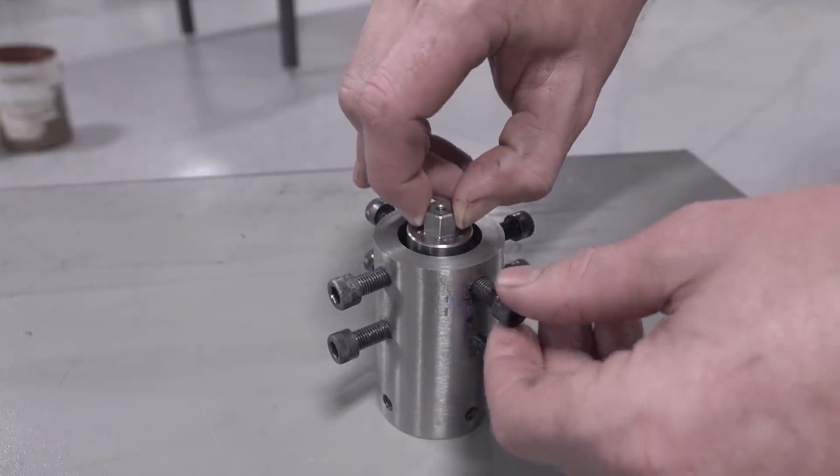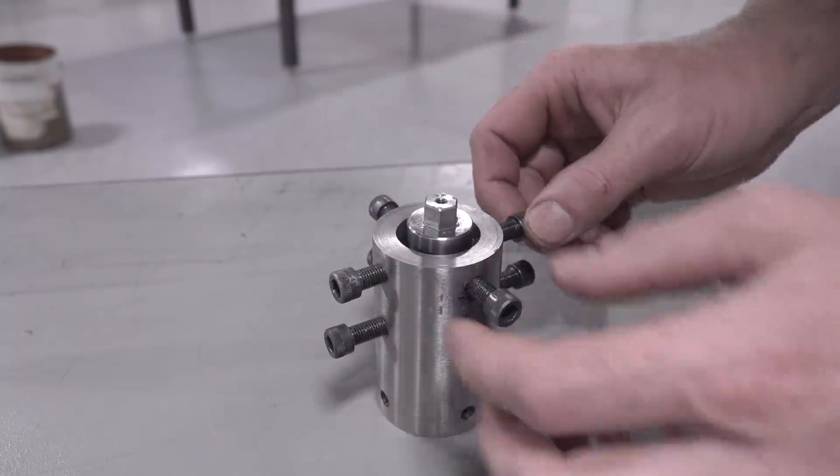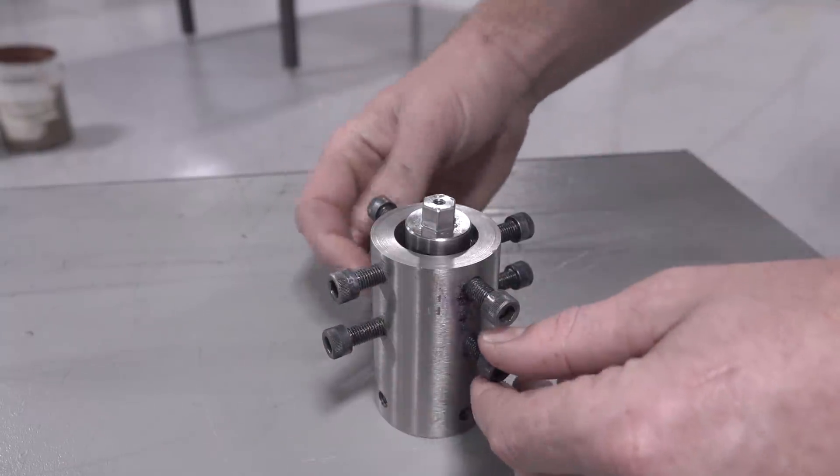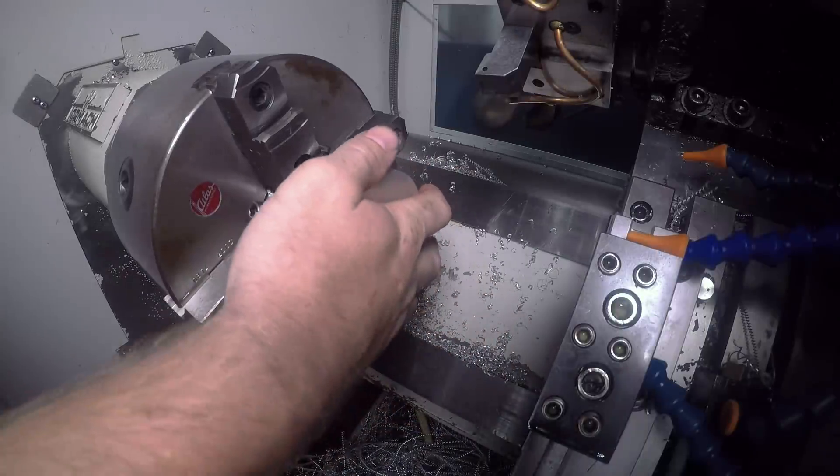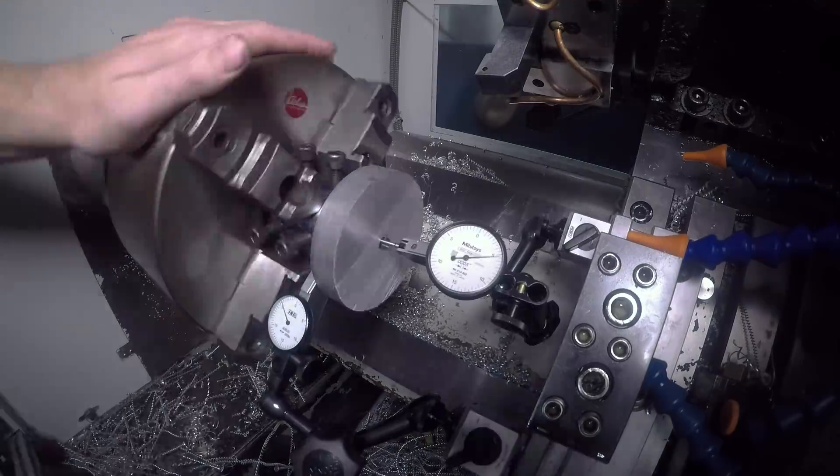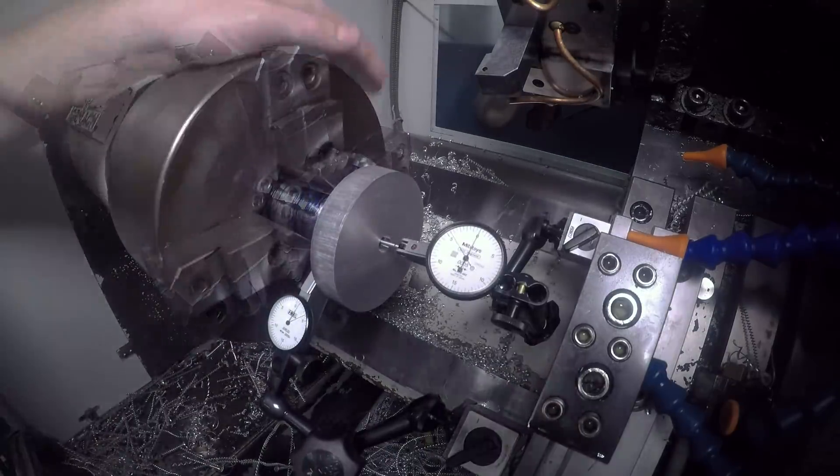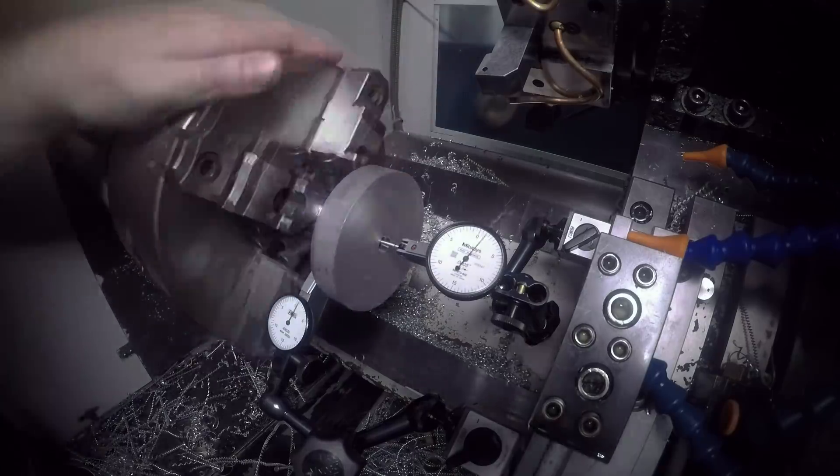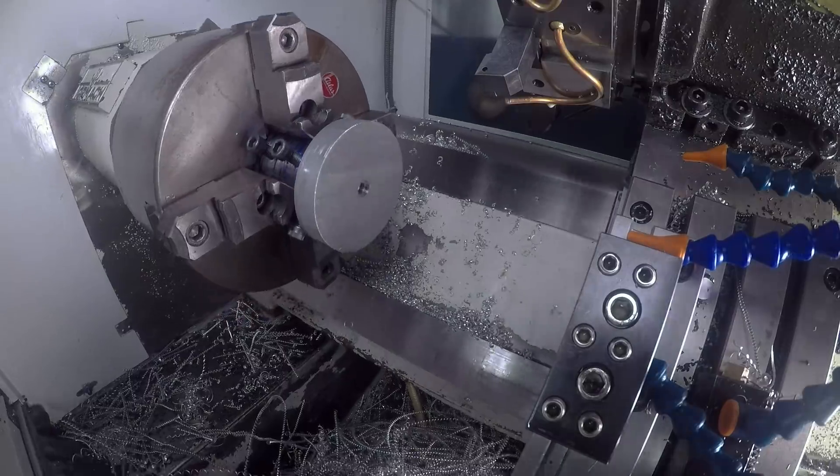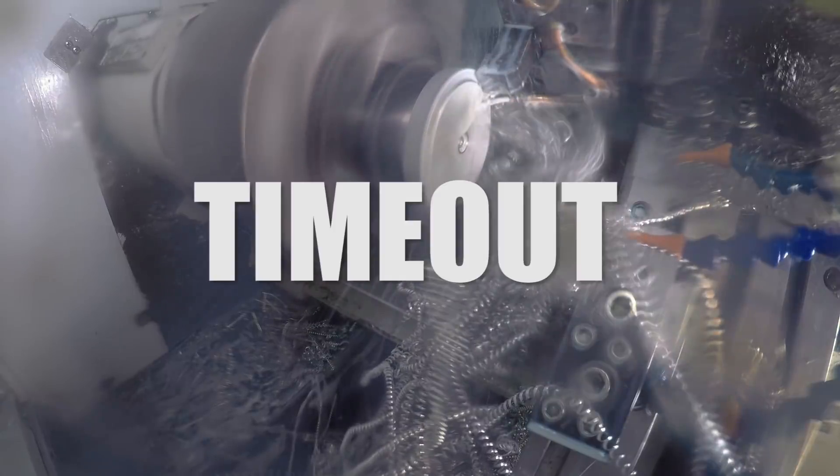Now we can make use of that hex pattern with a custom hex fixture. Slide our workpiece on there, use the cap screw, and then dial in both the radius and the face of our part. All right, folks. See those bird's nests? Time out. Let's look at cutting aluminum the right way.